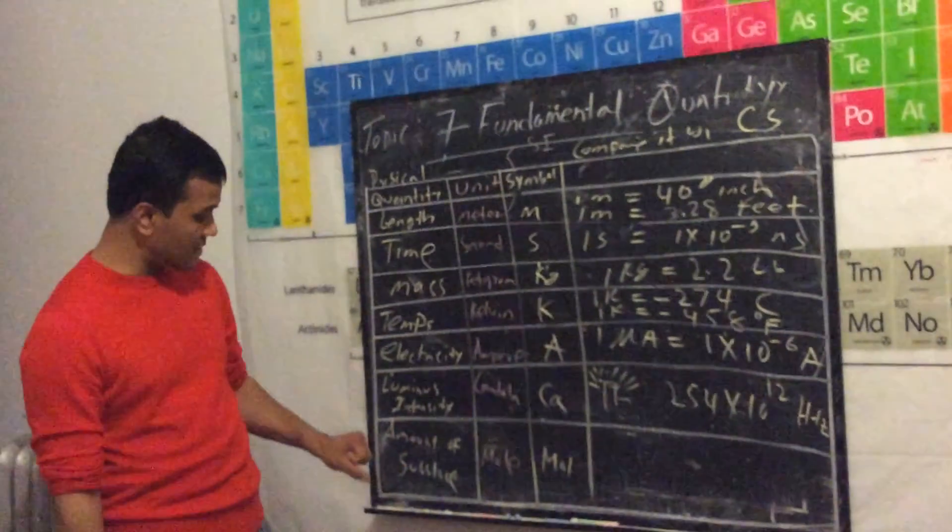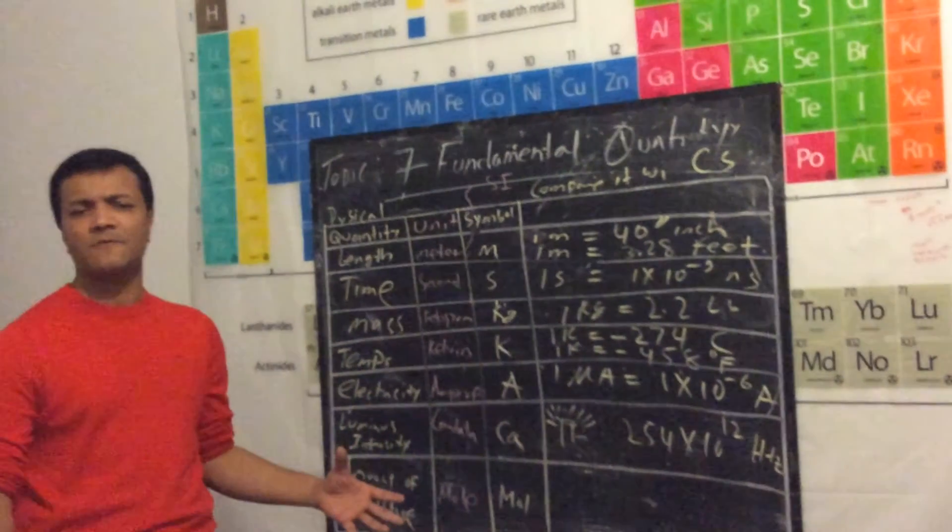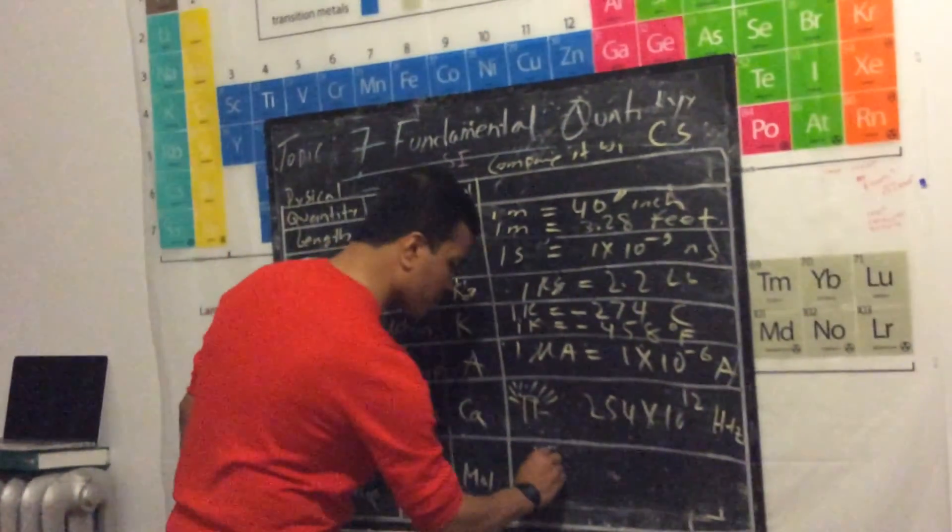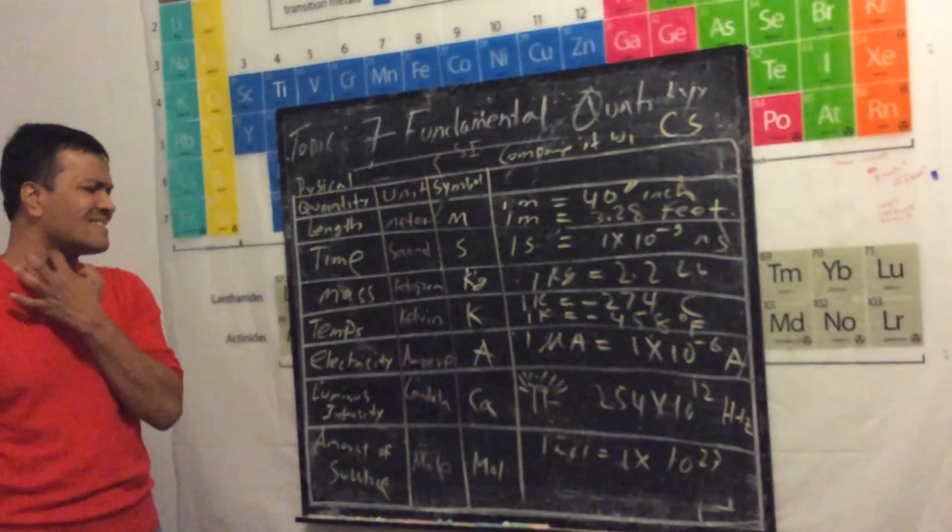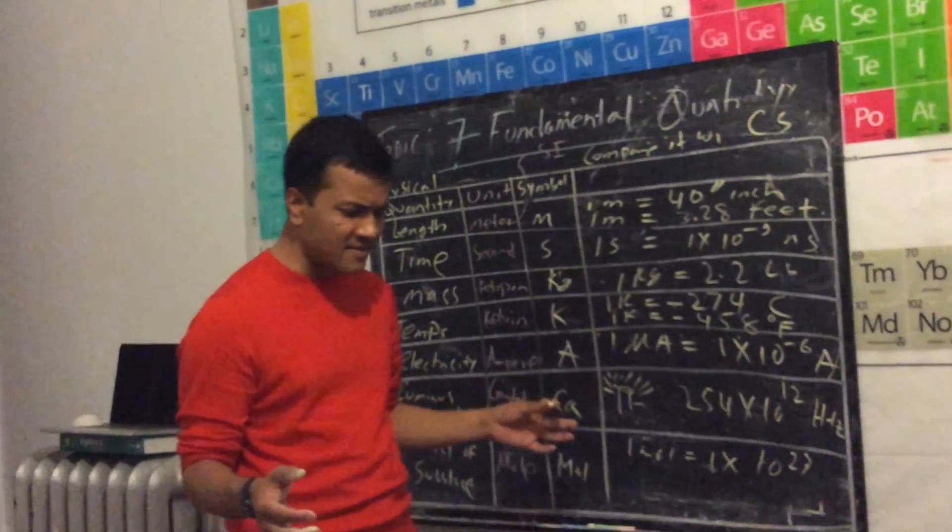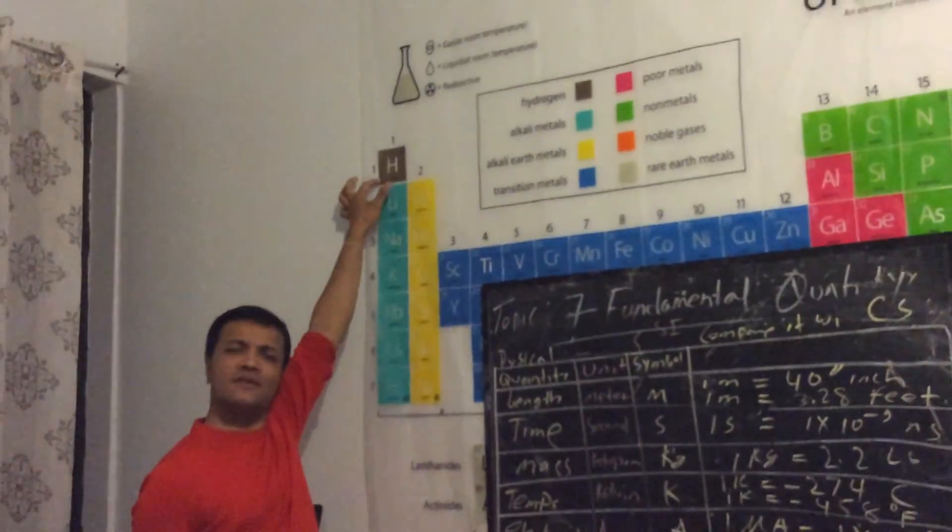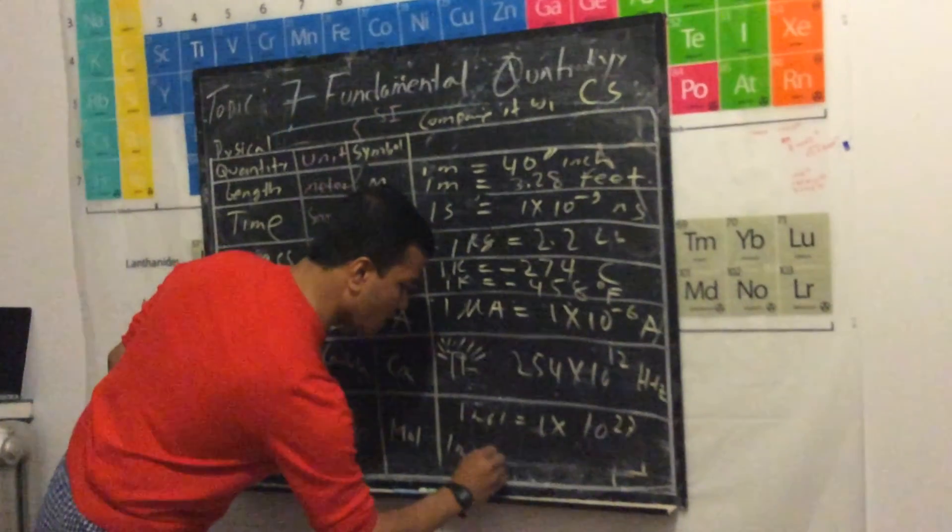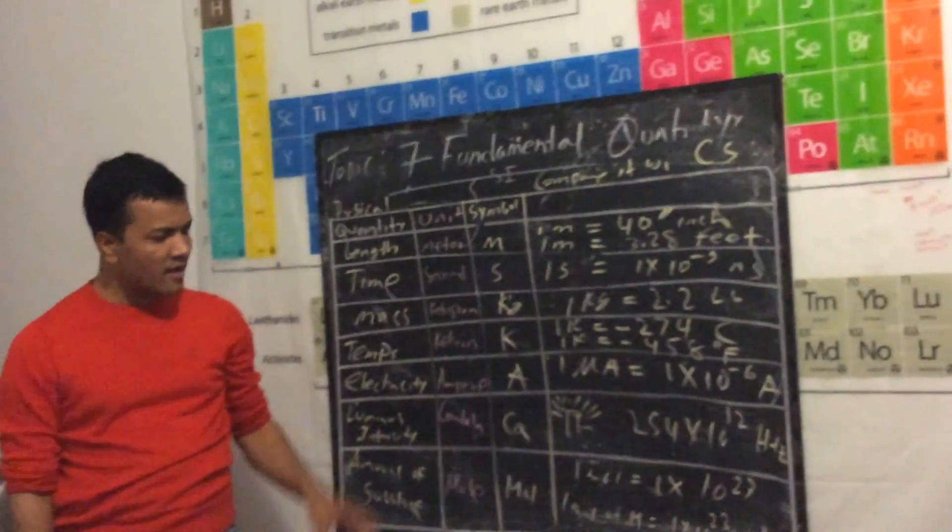Last but not least, amount of substance. The amount of substance is actually one of the important fundamental quantities for chemistry. Chemistry students use it every day. One mole is equal to 1 times 10 to the power of 23. What does that mean? That means very simple. What is one dozen eggs? One dozen eggs is about 12 eggs. So one mole of, for example, hydrogen is equal to 1 times 10 to the power of 23 hydrogen atoms.